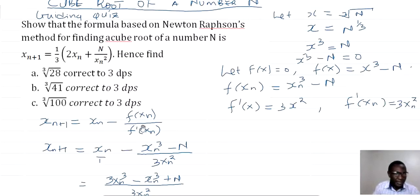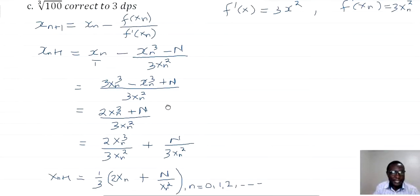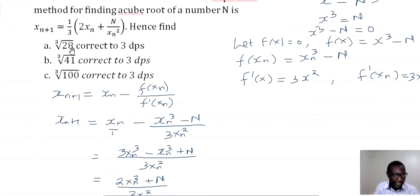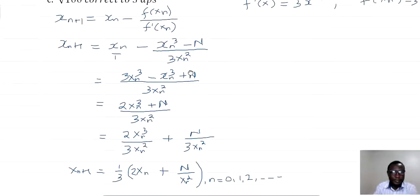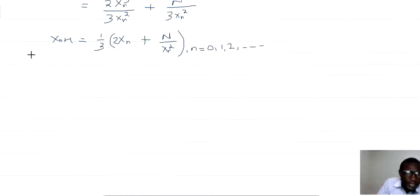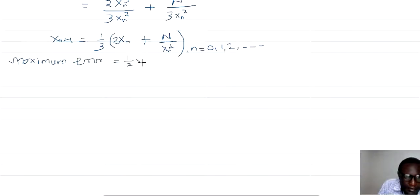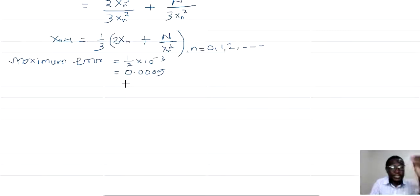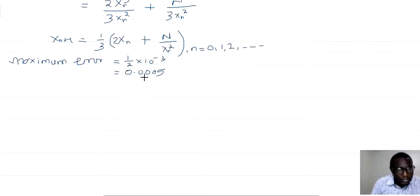Next, we are going to use this formula to find the cube root of 28, to three decimal places. Three decimal places means the maximum possible error is equal to one-half times 10⁻³, which is 0.0005. Our error must not exceed this; if it does, we continue the calculation. Our capital N is equal to 28.